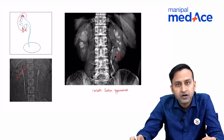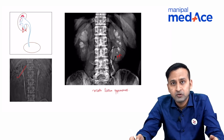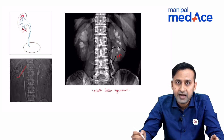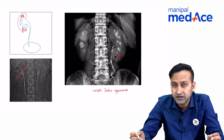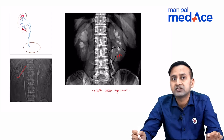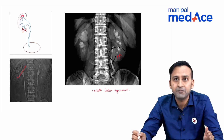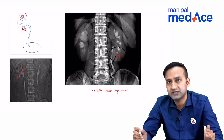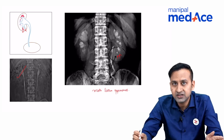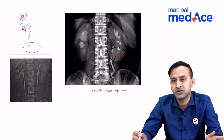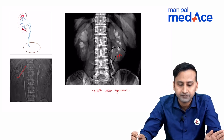Can we pick up the moth-eaten appearance on ultrasound? Definitely not. Can we pick it up on CT? Perhaps, but it can definitely be picked up on IVP because it is a calyceal pathology. Had it been a parenchymal pathology, CT would be better. So for early changes of genitourinary tuberculosis, IVP is still the investigation of choice.